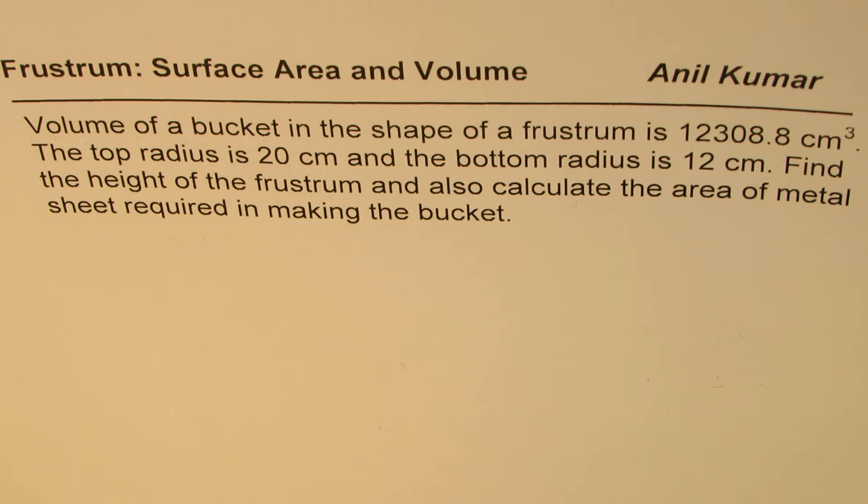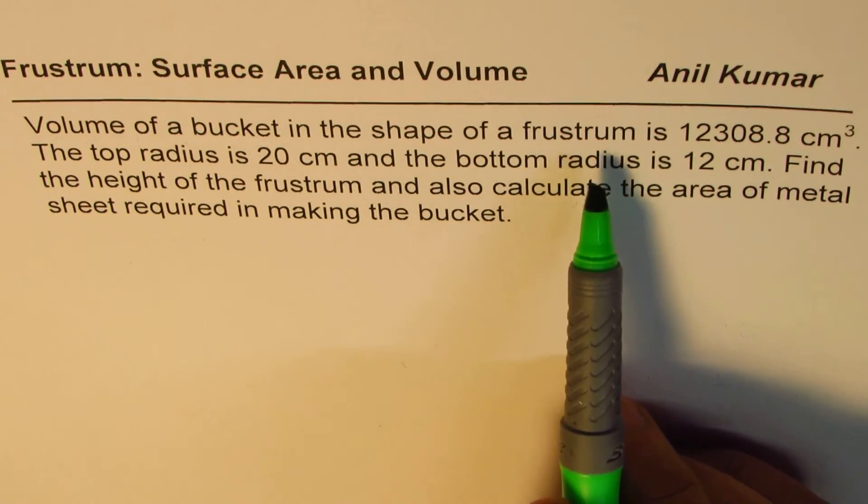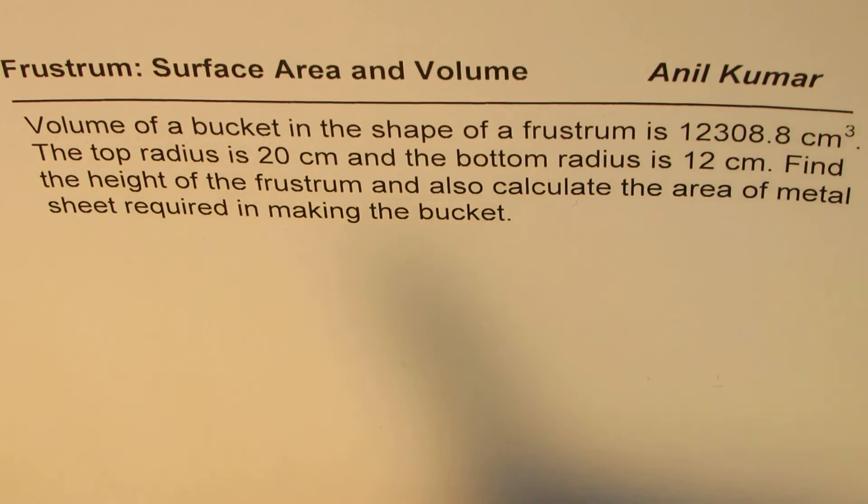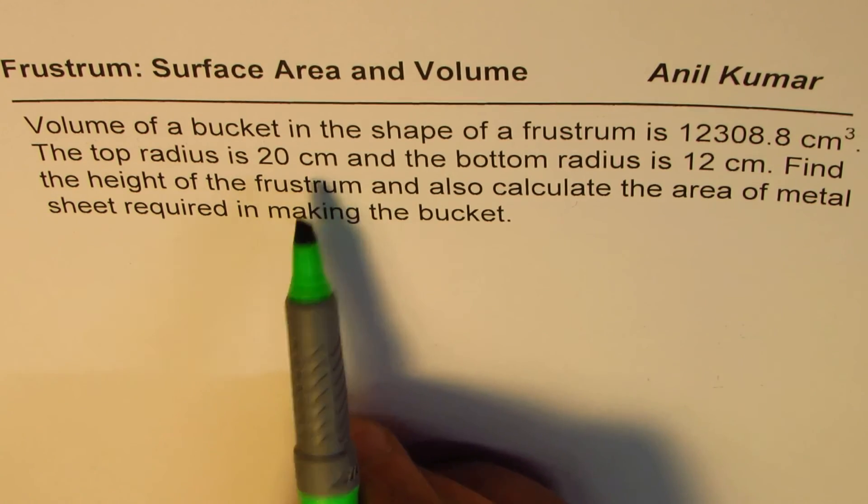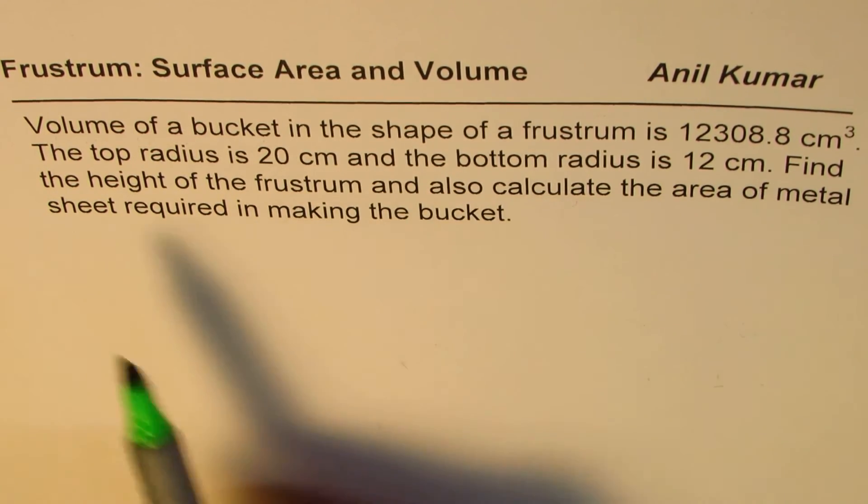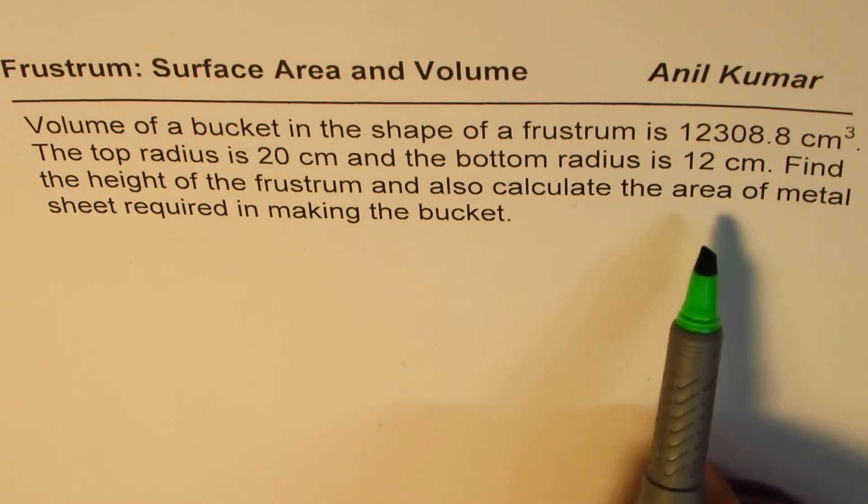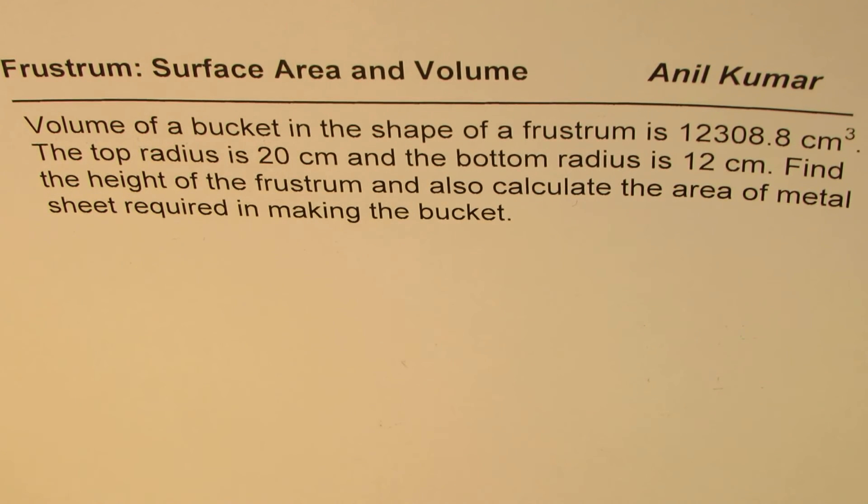Now here is a solution to one of the questions posted yesterday. The question is: volume of a bucket in the shape of a frustum is 12308.8 cm³. The top radius is 20 cm and the bottom radius is 12 cm. Find the height of the frustum and also calculate the area of the metal sheet required in making the bucket.